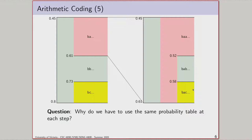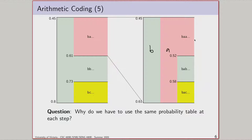Here's the key question: why must I use the same probability distribution at every single step? If I know in this example that you never see an A following another A, why wouldn't I be allowed to say B gets half the real estate, C gets the other half, and A has probability zero at this step? The answer is no — I don't have to use the same distribution. I can do whatever I want, and arithmetic coding makes it easy to change the probability distribution. I just have to look up the probability in a different table, as long as the decompressor can do the same thing.